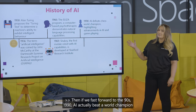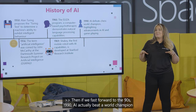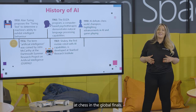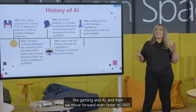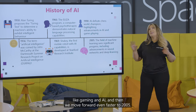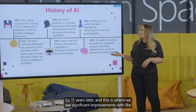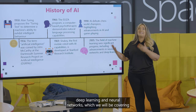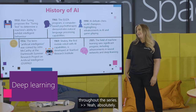If we fast forward to the 1990s, AI actually beat a world chess champion in the global finals, and it was all over the news because it was groundbreaking in terms of gaming and AI. Then moving forward to 2005, we see significant improvements with deep learning and neural networks, which we will be covering throughout the series.